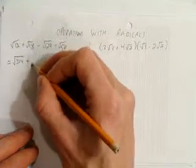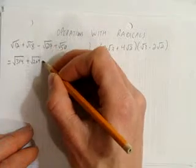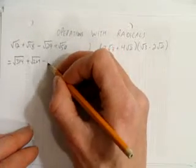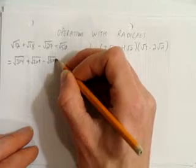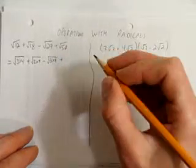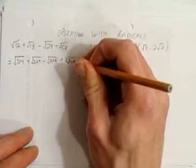18 breaks down to 2 times 9, 9 being another perfect square. 27, if I divide that by 3 I get 9, so I can make that 3 times 9. And lastly, 50. I know 50 is made up of 2 times 25, and 25 is another perfect square.